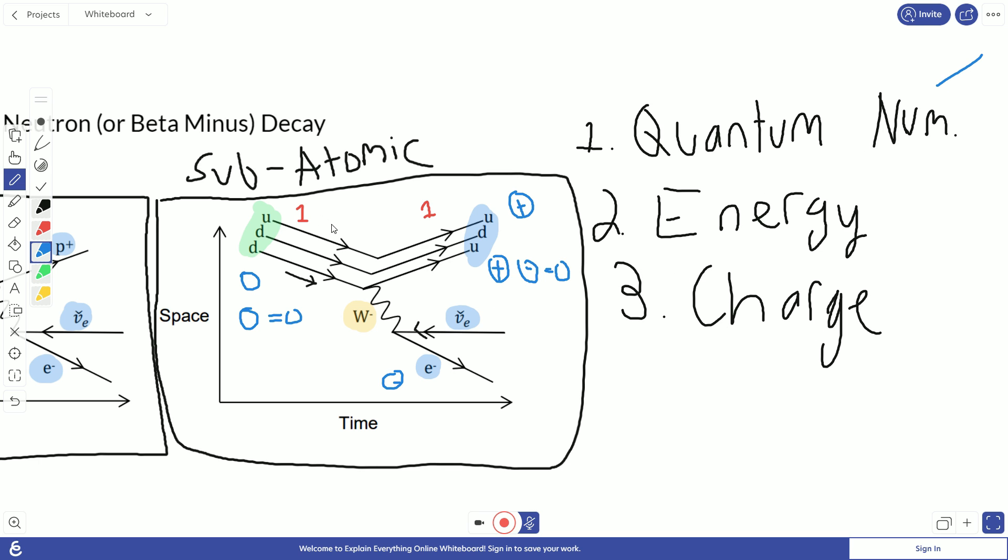And you may be wondering how is energy conserved here. Well, we again use the relationship E equals mc squared. And here for energy, the mass of these and the mass of these equal to the same energy.